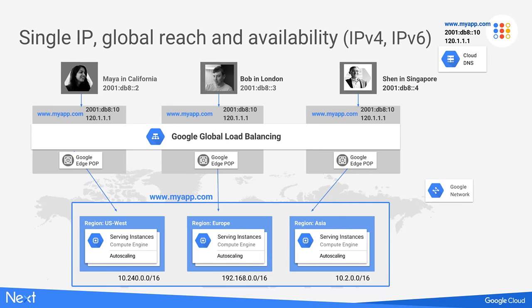In another cloud provider, you would have required three VIPs, one per region. Today, we are excited to introduce Google global load balancing for IPv6 clients as well. Your service, myapp.com, has a single V6 VIP — 2001:DB8::10. Maya in California, Bob in London, and Shen in Singapore can all connect to your service using a single Anycast VIP. The request is automatically load balanced to the instance closest to them with available capacity. This is a unique differentiation for Google's global load balancing — you will not get this in any other cloud provider.